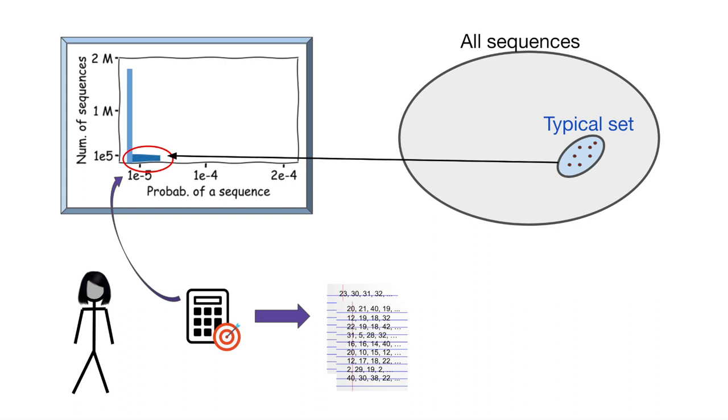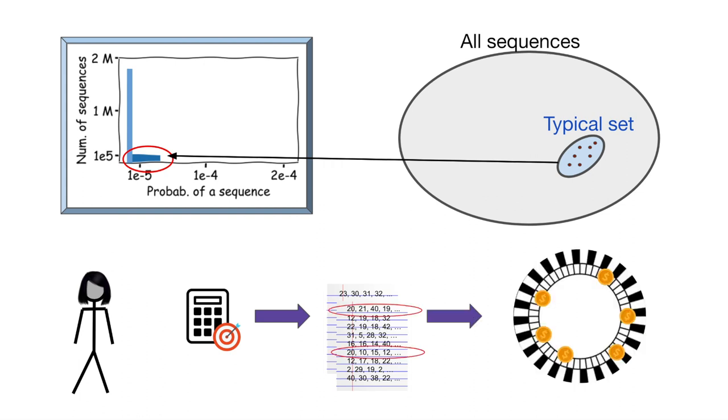So, what is Ashley's winning strategy? First, she figures out the target probability that sequences in the typical set have. Then, she lists all length n sequences, and selects the ones with close to the target probability of occurring. She places her coins evenly across these sequences.